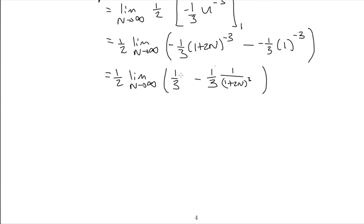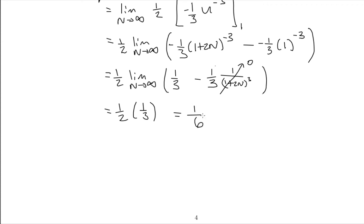Now I'm able to take my limit. What happens to these terms as n goes to infinity? This 1/3 has no n in it at all so nothing happens to it. But looking at the second term, as n gets really big, the number in the denominator also gets very large, and when we cube it that gets even larger — a very large number growing without bound on the bottom. So 1 divided by a number that keeps getting bigger goes to 0. This whole second term goes to 0, and all we're left with is 1/3. So 1/2 times 1/3 is 1/6. This improper integral is convergent and its value is 1/6.